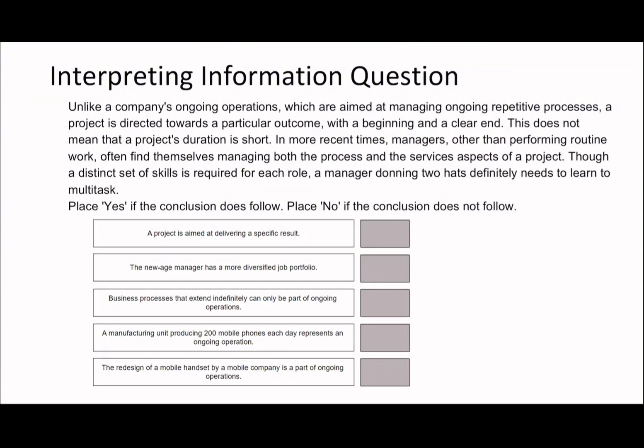If you'd like to have a go at this question, you can pause and put your answers in the comments below. So: 'Unlike a company's ongoing operations, which are aimed at managing ongoing repetitive processes, a project is directed towards a particular outcome with a beginning and a clear end.' The first statement says: 'A project is aimed at delivering a specific result.' I think it's quite comical the way they like to do synonyms — 'directed towards a particular outcome' becomes 'delivering a specific result.' I'd say this is true.